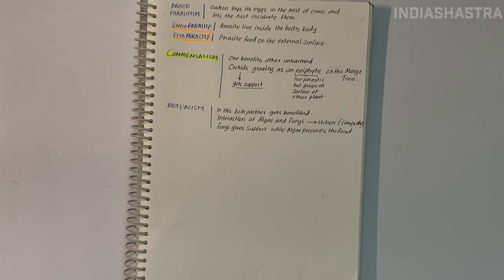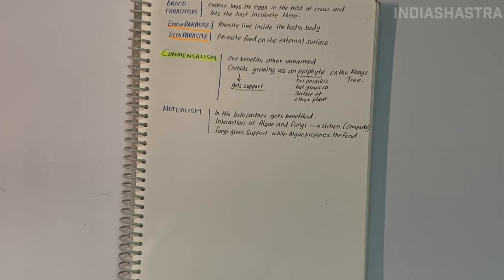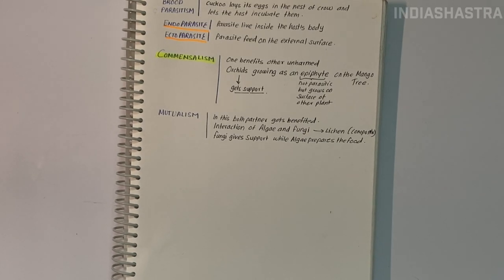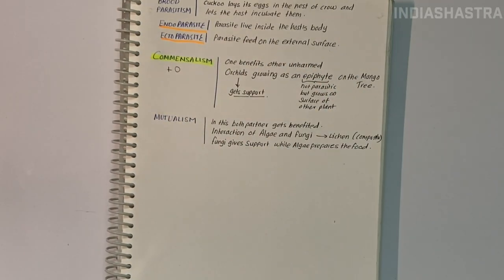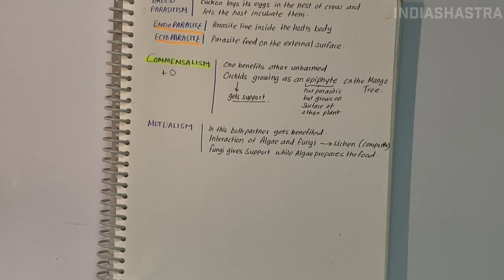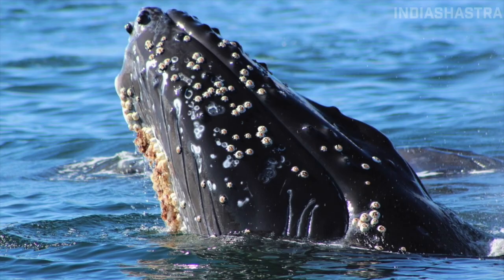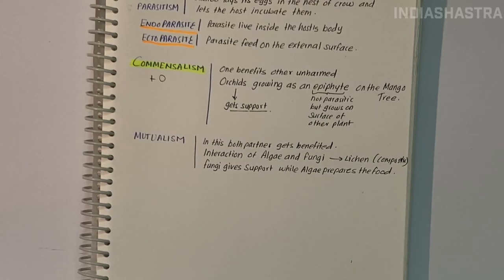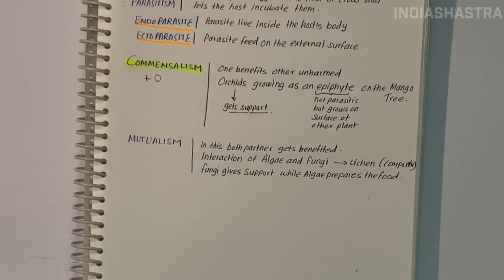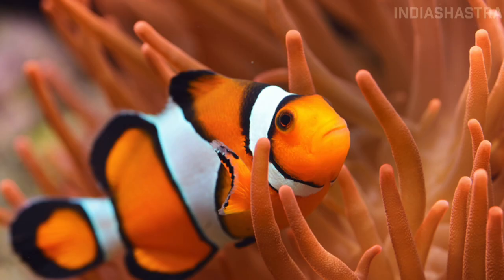Commensalism is interaction where one species benefits and the other is neither harmed nor benefited. For example, an orchid growing as an epiphyte on a mango branch and barnacles growing on a whale's back benefit while neither the mango tree nor whale derives any benefit. Another example is sea anemone with stinging tentacles and the clownfish living among them. The fish gets protection from predators. The anemone doesn't appear to derive any benefit.